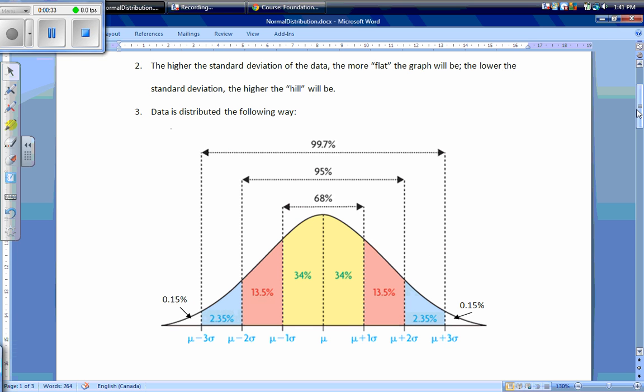Data is distributed the following way in a normal curve: 68% of the data lies within 1 standard deviation of the mean, 95% of the data lies within 2 standard deviations of the mean, and 99.7% of our data lies within 3 standard deviations of our mean, leaving 0.15% on each side.